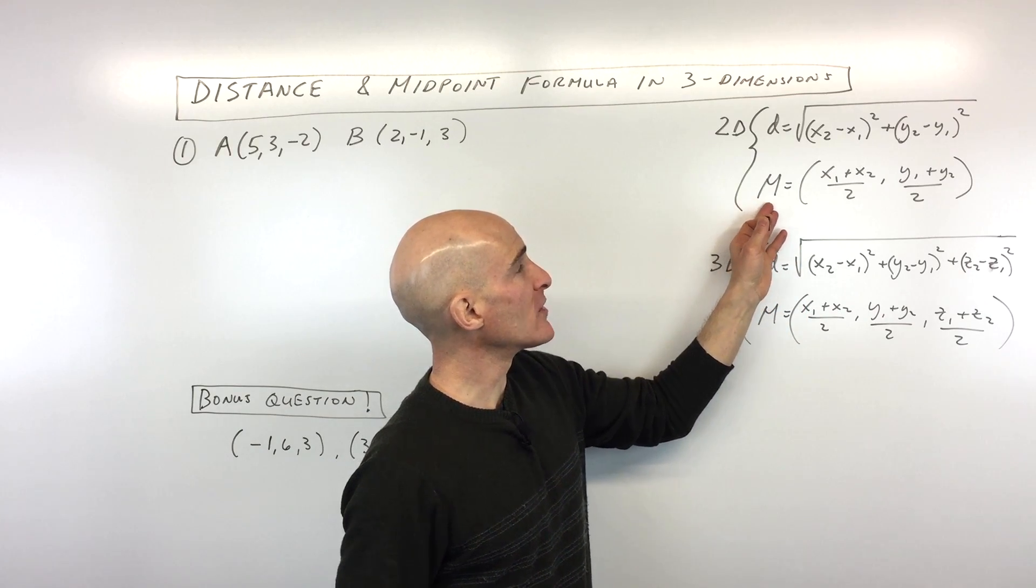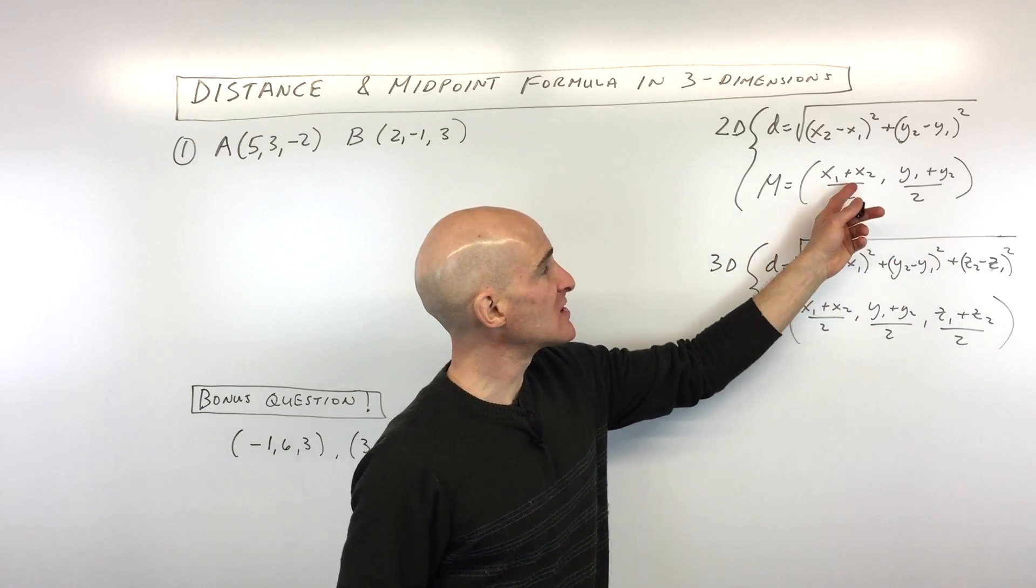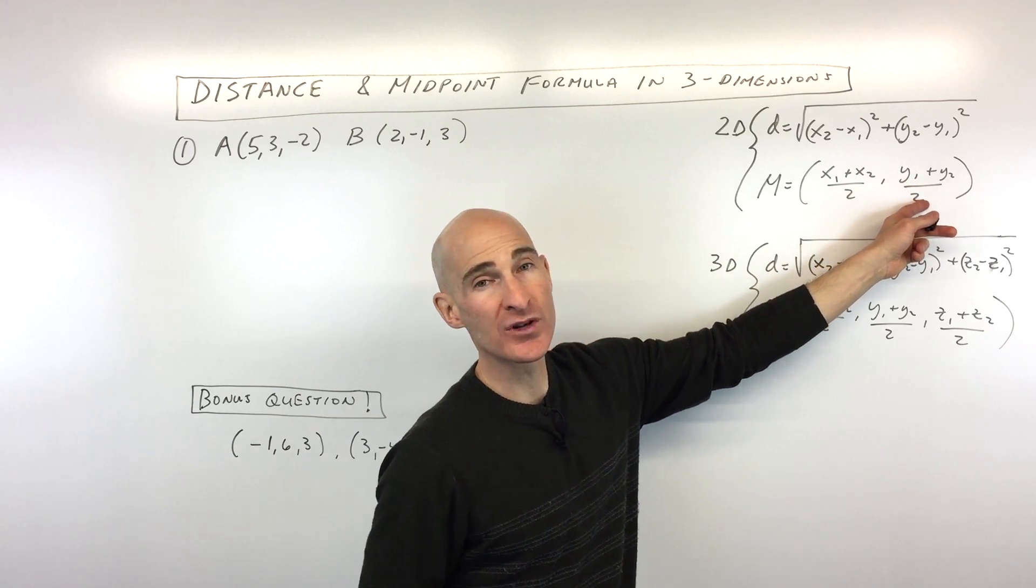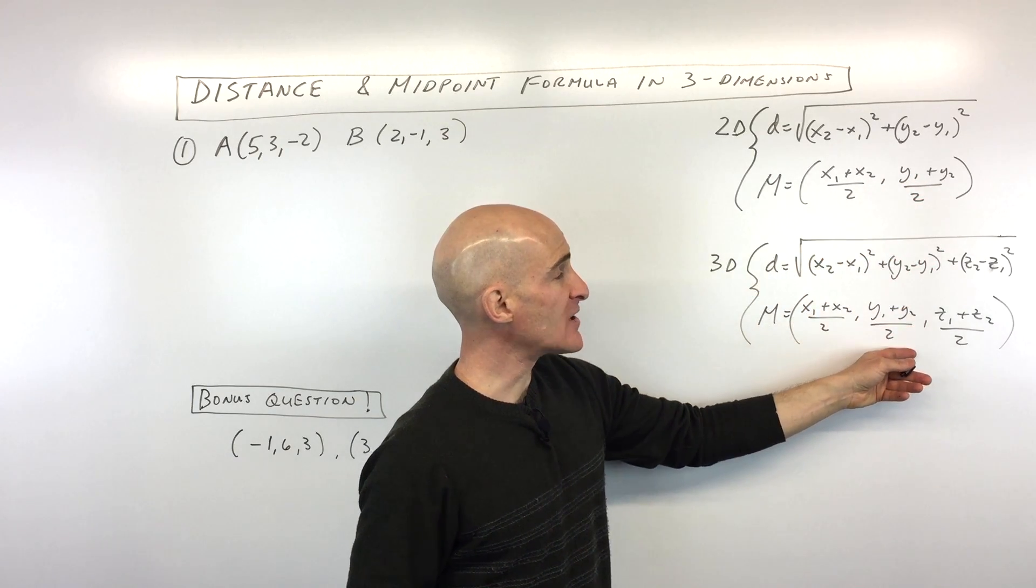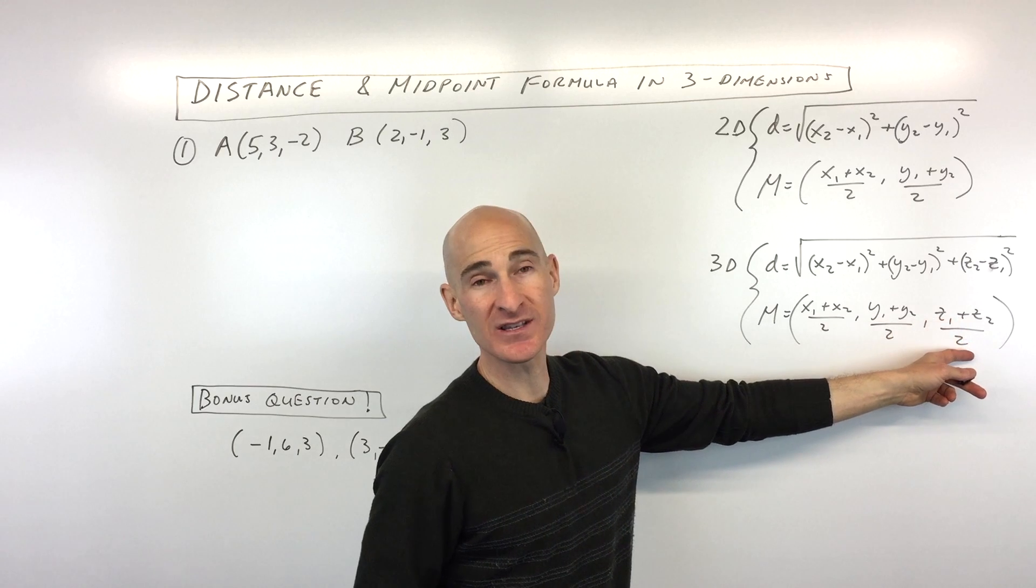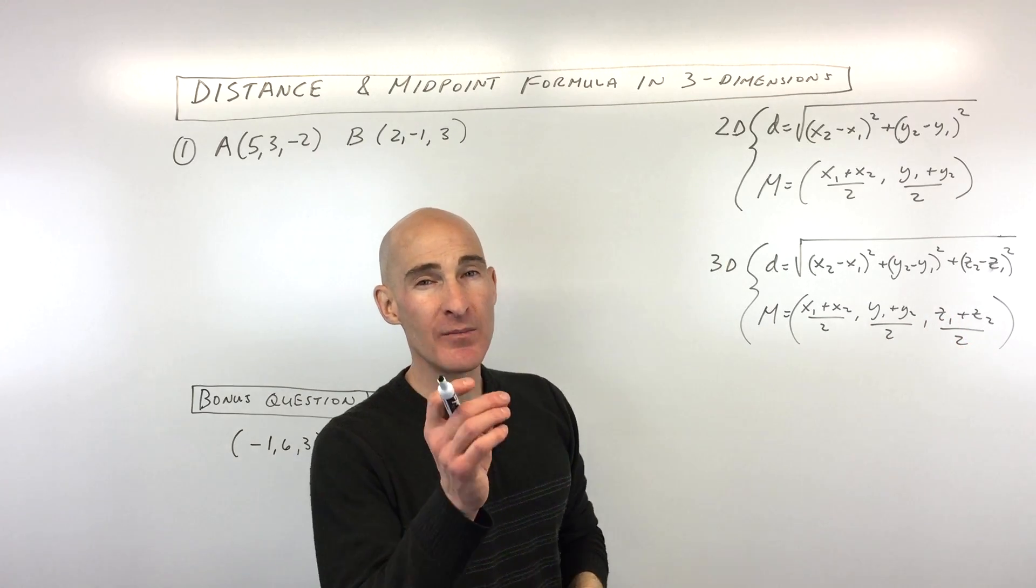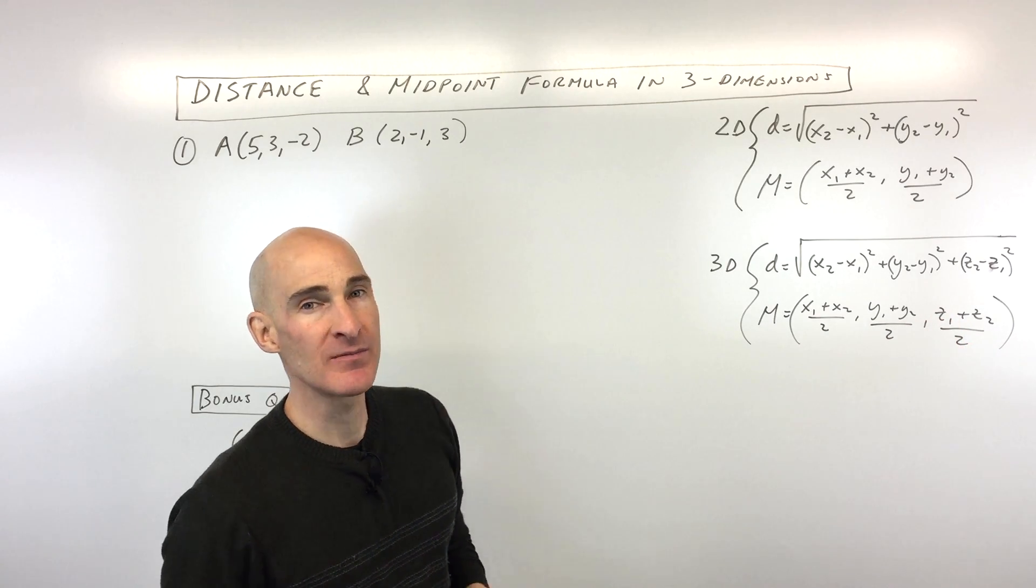Now, the midpoint formula is more like an average. You're adding the x-coordinates together and dividing by two, adding the y-coordinates and dividing by two. In three dimensions, you're also adding the z-coordinates and dividing by two, and that's gonna give you the midpoint of that line segment in space, or in 3D.